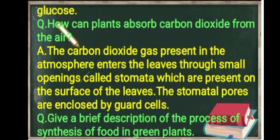The next question: how can plants absorb carbon dioxide from the air? The carbon dioxide gas present in the atmosphere enters the leaves through small openings called stomata, which are present on the surface of the leaves. The stomatal pores are enclosed by guard cells.